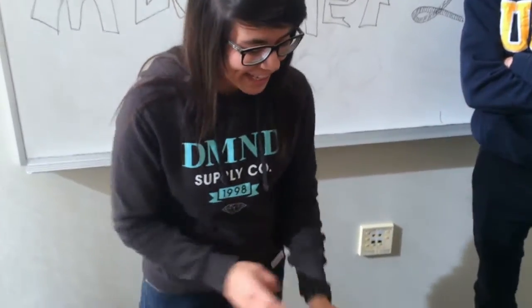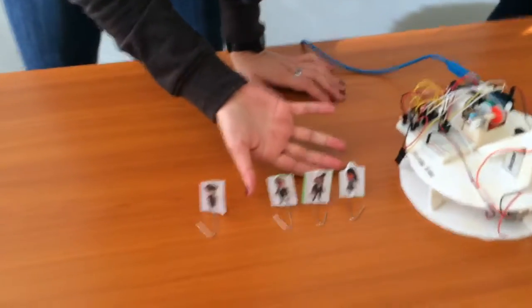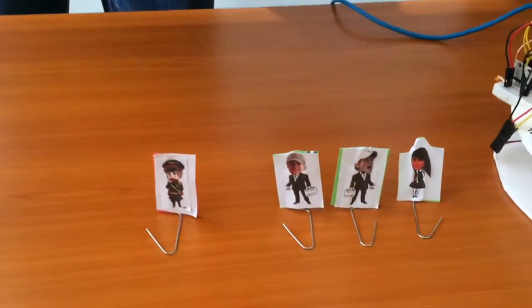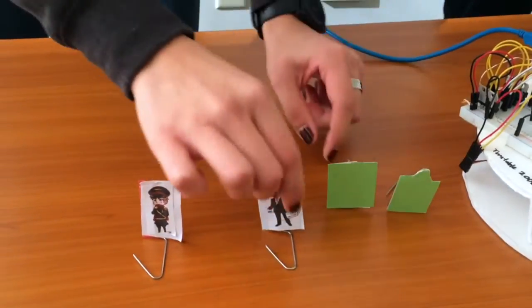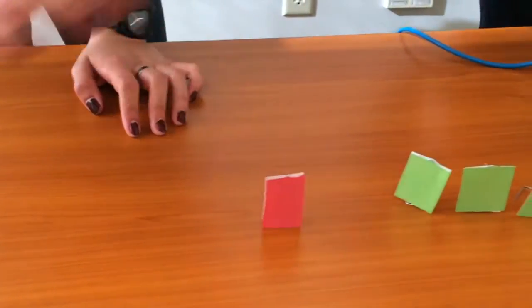Alright, so the goal of this project is to get these little people to safety away from this bad person. These people have a green back coating, while this one has a red back coating.